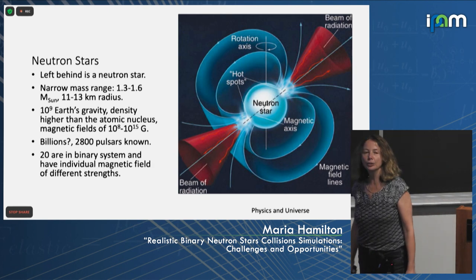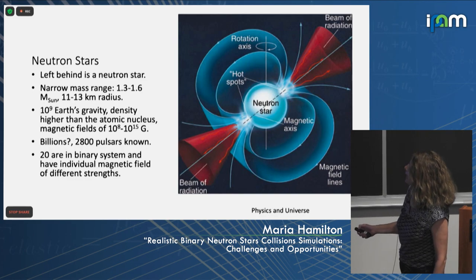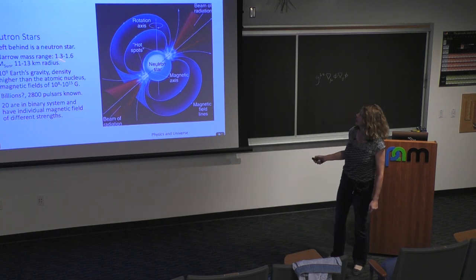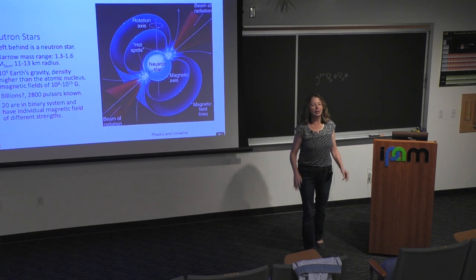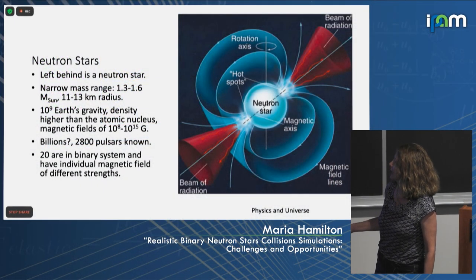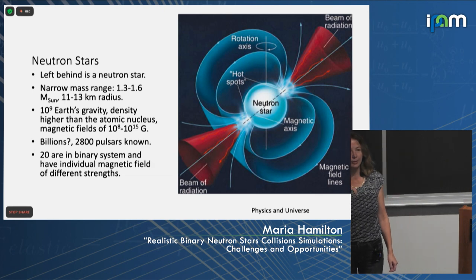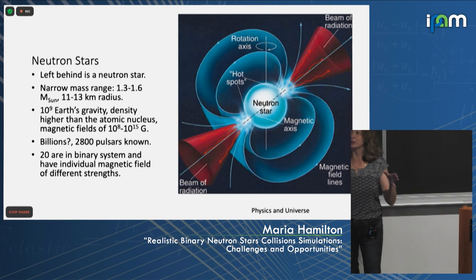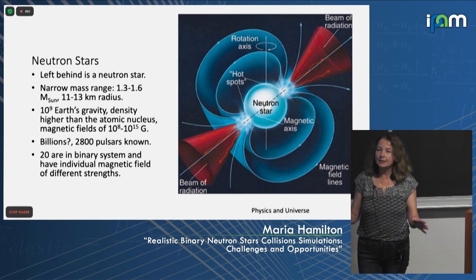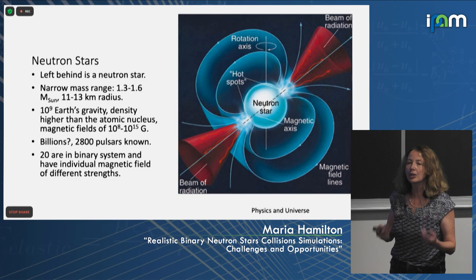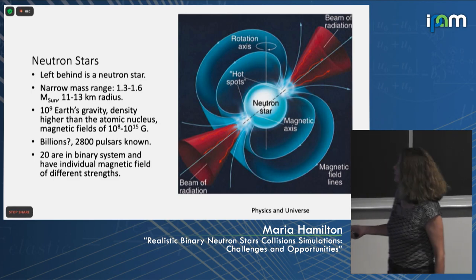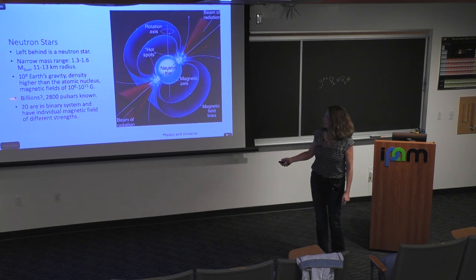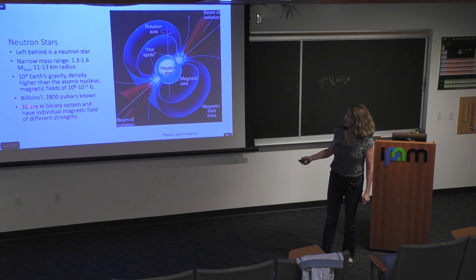The mass of the neutron star is very narrow. Astronomical observations show that they peak between 1.3 and 1.6 solar masses, with a very narrow radius as well. The gravity is extremely high, and they have incredibly high magnetic fields. It is estimated that we have billions of neutron stars in galaxies. But to be discovered, they need to emit electromagnetic radiation. Not all of them do — only pulsars do. We know 2,800 pulsars. What I am most interested in are binary systems.